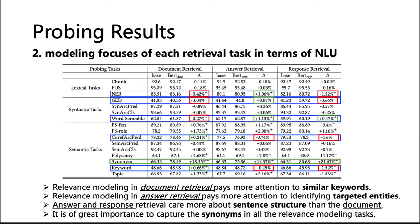Looking at individual probing tasks, we find that for keyword and coreference arc prediction, only document retrieval improved performance. For NER, only answer retrieval improves performance, showing that document retrieval pays more attention to similar keywords while answer retrieval focuses on identifying targeted entities. For word scramble tasks, both answer retrieval and response retrieval improve performances, indicating they care more about sentence structure than document retrieval does. Finally, synonymy has been improved by all three retrieval tasks, demonstrating that capturing synonyms is of great importance in all relevance modeling.